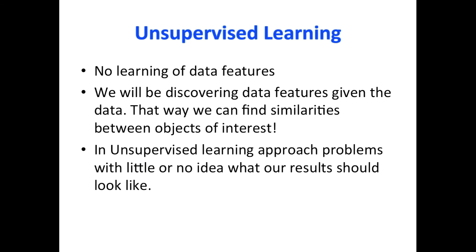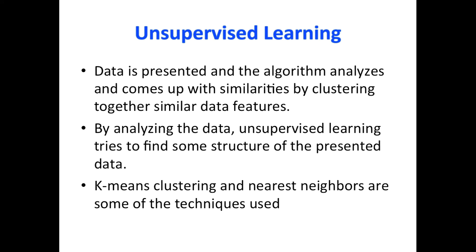Now let's go to unsupervised learning. In unsupervised learning, there is no learning of data features — we will be discovering data features given the data. That way we can find similarities between objects of interest. In unsupervised learning, we approach problems with little or no idea what our results should look like. Data is presented and the algorithm analyzes and comes up with similarities by clustering together similar data features. By analyzing the data, unsupervised learning tries to find out some structure of the presented data.